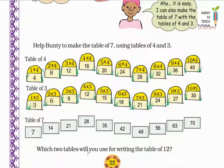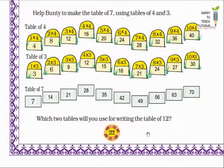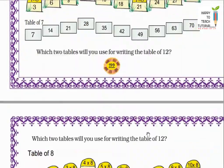Next, which 2 tables will you use for writing the table of 12? There are so many ways to write the table of 12. You can use 7 plus 5, or 8 and 4, or 9 and 3, or 10 and 2. There are many methods to write the table of 12. You can apply any of these. Here I have written the table of 12 using tables of 8 and 4.